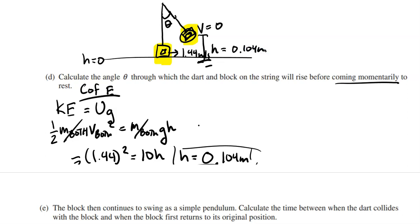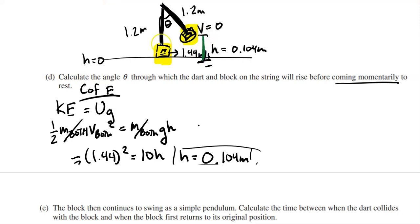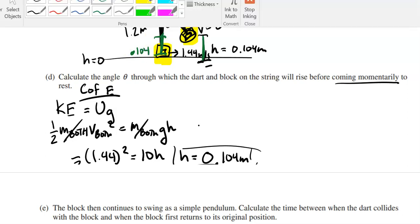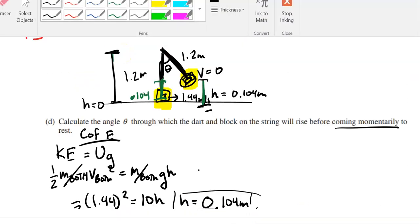The string length is 1.2 meters. The height risen is 0.104 meters. The vertical distance from pivot to the block's final position is 1.2 − 0.104 = 1.096 meters. In the right triangle formed, the hypotenuse is 1.2 meters and the adjacent side is 1.096 meters. So theta = inverse cosine of 1.096/1.2, giving approximately 24 degrees.